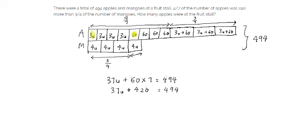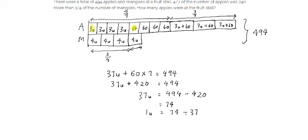To find 37 units, I calculate 494 minus 420, which gives me 74. Then 1 unit equals 74 divided by 37, which equals 2. So 1 unit equals 2.